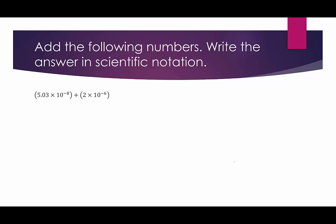Which power of 10 is bigger: negative 8 or negative 6? The answer is negative 6. So what do I need to turn negative 8 into negative 6? I need to add 2 to the exponent, meaning I'm multiplying by 2 powers of 10, which is 100. If I'm increasing this exponent by 2 powers of 10, I need to divide the other factor by 100 — dividing by 100 means moving the decimal two places to the left — giving 0.0503 times 10 to the negative 6.